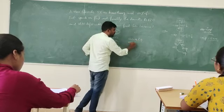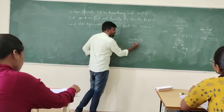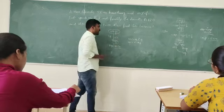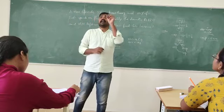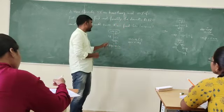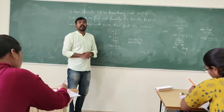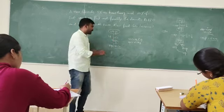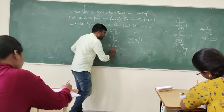So 20% of 95 parts is 19 parts. Out of 95 parts, he is spending 19 parts on food. He is left with 76 parts.